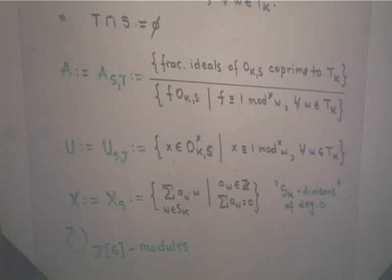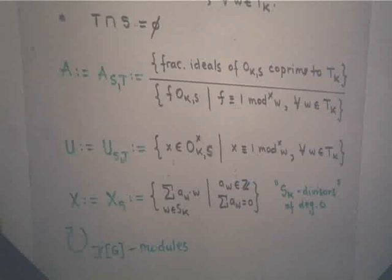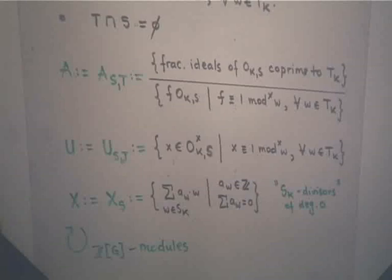There is a group of units — the so-called S,T units. These are elements x in G_m(O_{K,S}), meaning S-units in the top field, which have the additional property that they are congruent to 1 modulo every single prime W in T_K. In order to simplify things, later on I'll drop S and T from the notation, since S and T will be fixed throughout the talk. So U_{S,T} will become U, and A_{S,T} will become A.